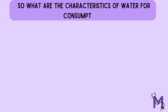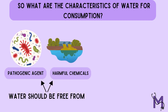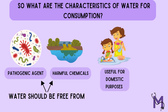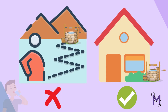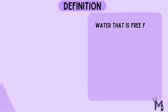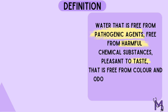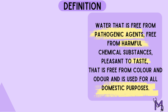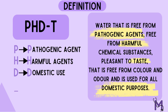What are the characteristics of water to be safe for consumption? The water in question should be free from pathogenic agents and harmful chemical substances. It should also be usable for domestic purposes and hence be pleasant to taste. It is also necessary for the water to be available close to the people, since if it is at a distance, people might just use water from the source close to them, which may not necessarily be potable. Thus, potable water has been defined as water that is free from pathogenic agents, free from harmful chemical substances, pleasant to taste, that is free from colour and odour, and is useful for all domestic purposes. The four key points in this definition can be remembered with the mnemonic PHDT, where P stands for pathogenic agents, H for harmful agents, D for domestic use, and T for taste.